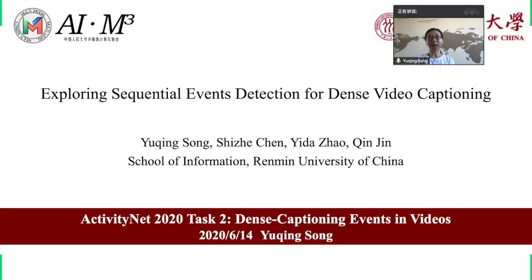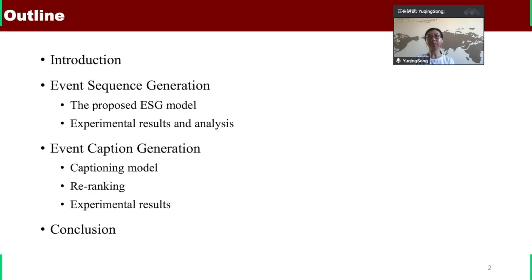Hi everyone. My name is Yuqing Song. I will present our work exploring sequential events detection for dense video captioning. This is joint work with Shi Zhechen, Yi Dazhao, and Qin Jin. We are from Renmin University of China. This is the outline of the presentation. I will first introduce the task and then describe the two main modules of our system, including the event sequence generation module and event caption generation module. In the end, I will make a summary of our work.